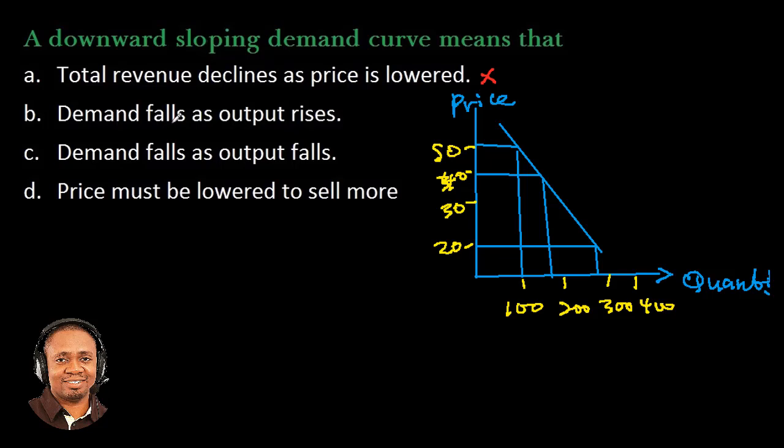Alright, option B: demand falls as output rises. When demand falls, we see that the price has increased. So this is not correct. When the demand falls, it means that the price has increased. So this is not correct.